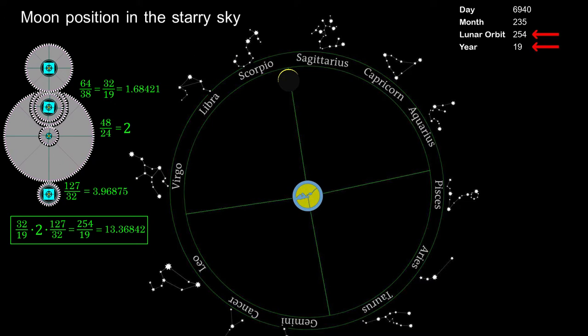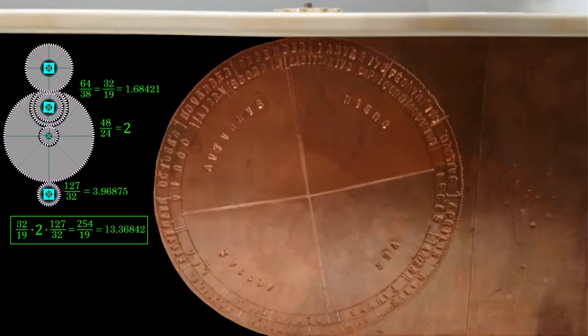With these gears the numerical ratio 254 by 19 is calculated. This results in the different speeds of rotation of the solar and lunar pointer. 254 by 19 is 13.36842 and that's the ratio at which the lunar pointer turns faster than the solar pointer. So let's take a closer look at these gear wheels one after another.